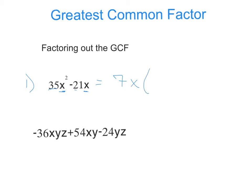Now, when we factor out a greatest common factor, we have to use parentheses to distribute it back. So, what do I have to multiply 7x by in order to get 35x squared? Well, 7 times 5 is 35, and x times x is x squared.